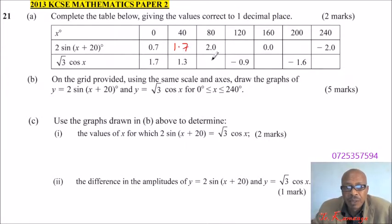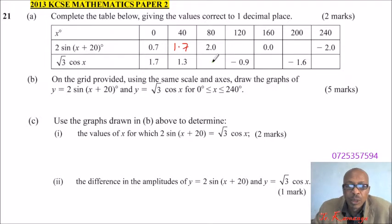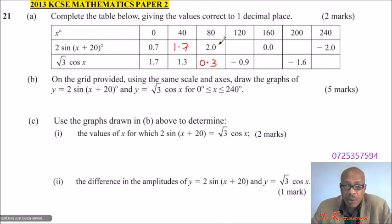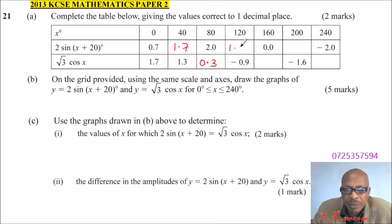For the next missing value, since x is 80, compute √3 cos 80, which gives 0.3 to one decimal place. Then for 2 sin(120 + 20) = 2 sin 140, that gives 1.3 to one decimal place.